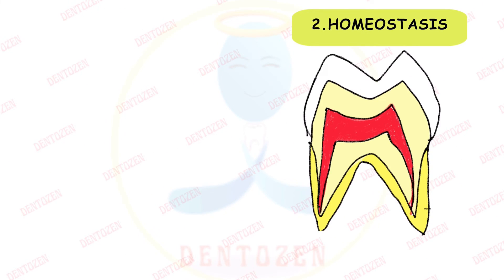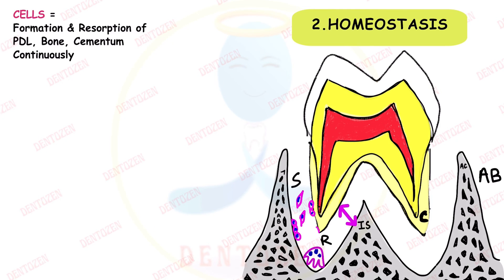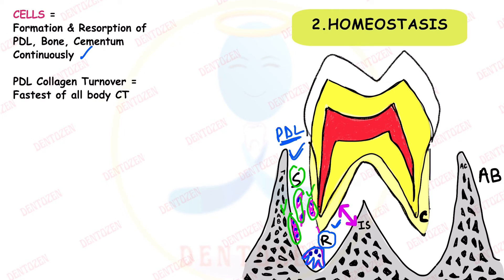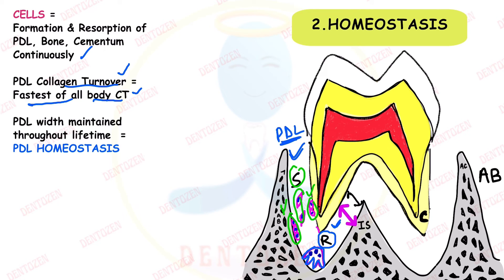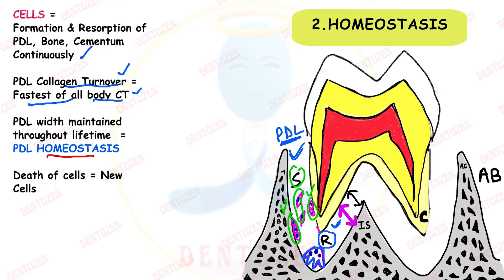The second function is homeostasis, maintained by cells: fibroblasts form fibers, osteoblasts form bone, cementoblasts form cementum, and resorptive cells destroy these structures. Synthesis and resorption both continuously occur. The collagen turnover of the PDL is the fastest of all body connective tissues — fibers are constantly forming and being destroyed. The PDL width is maintained by these two processes of formation and resorption, and this function is called homeostasis.